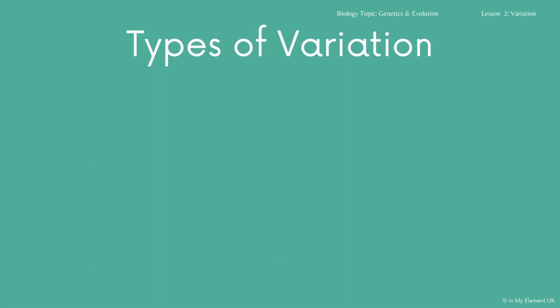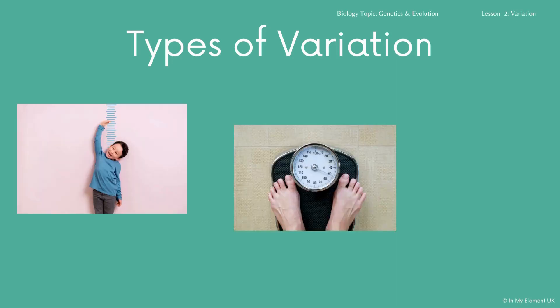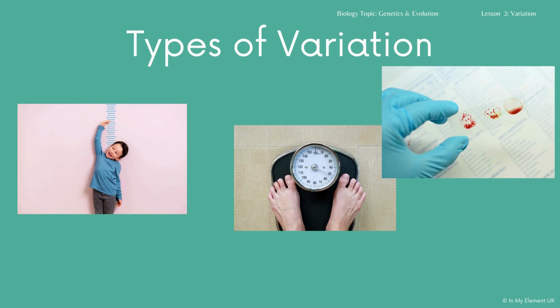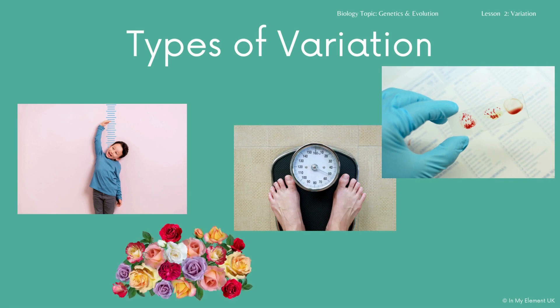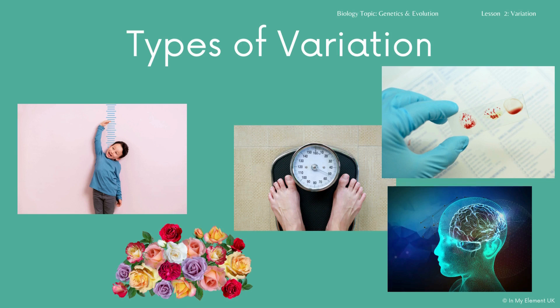All of this can be looked at through different types of variation. There are two types of variation you need to know about. The first is continuous variation — looking at things like height and weight. The second is discontinuous variation — for example, blood groups and petal colour in flowers, as well as intelligence. These all fall into one of these two different types of variation.